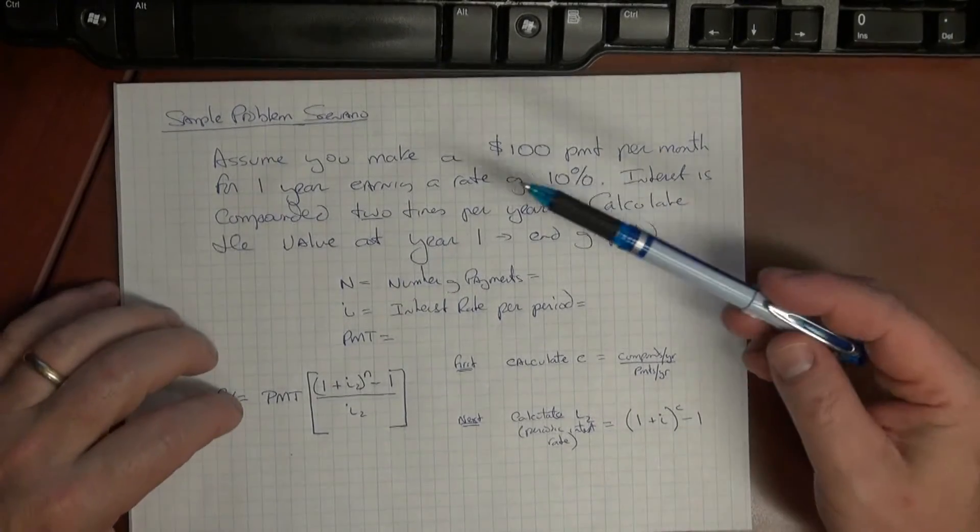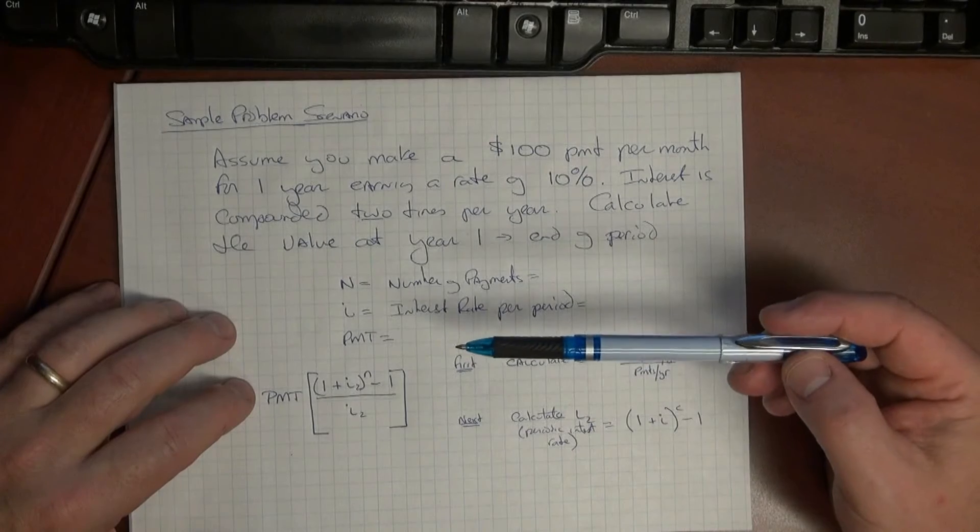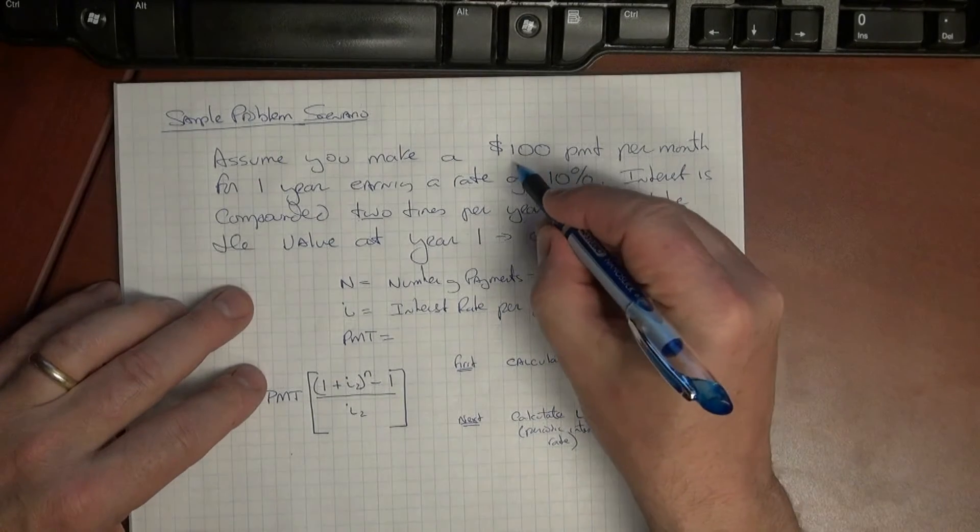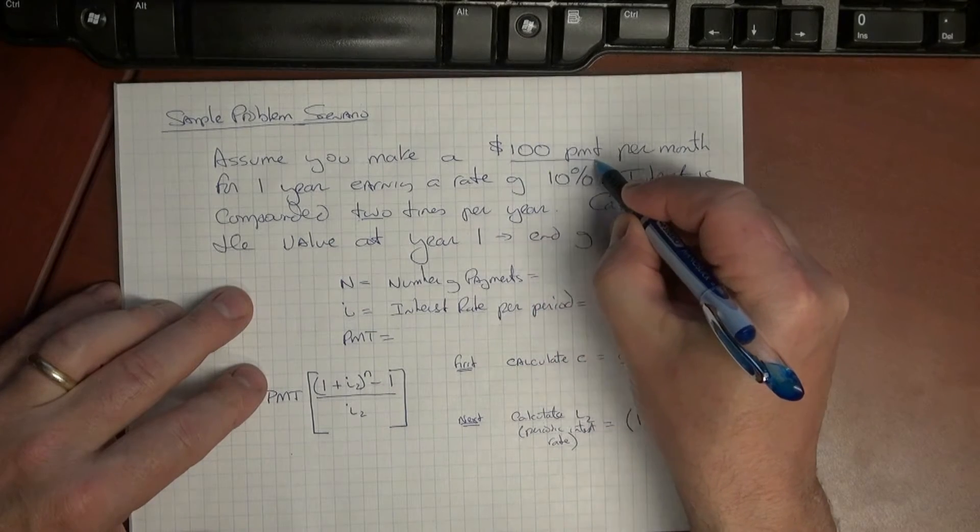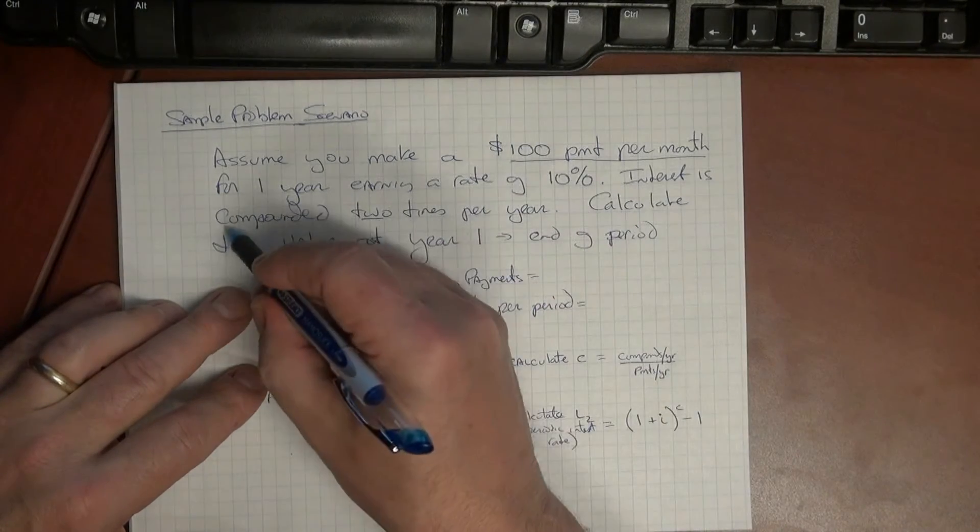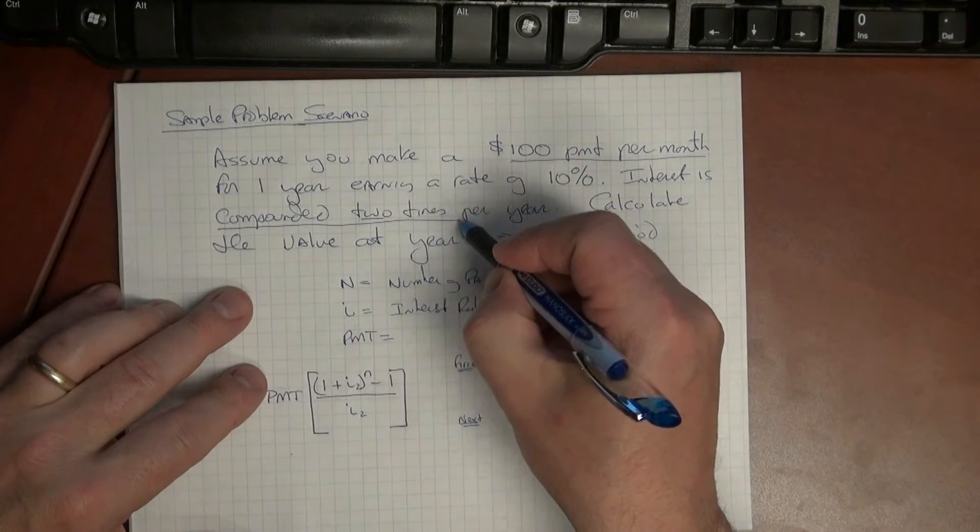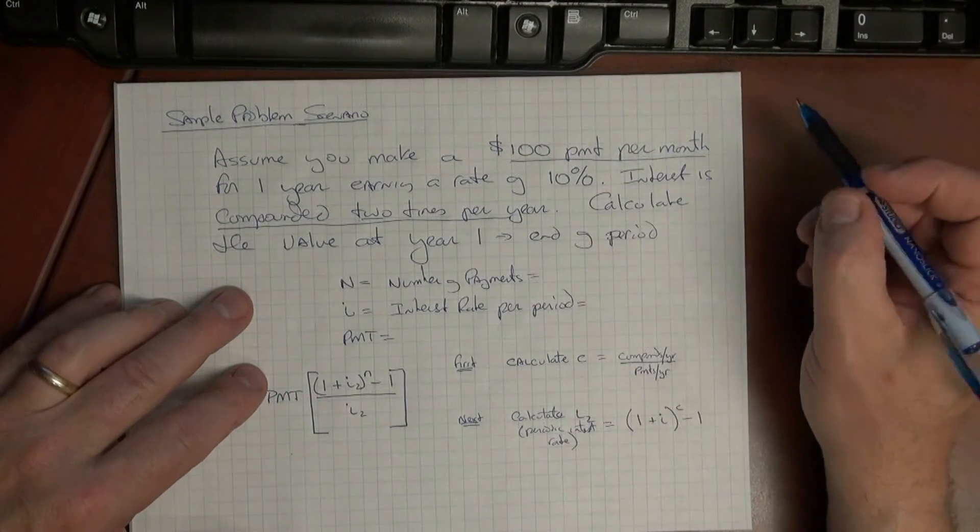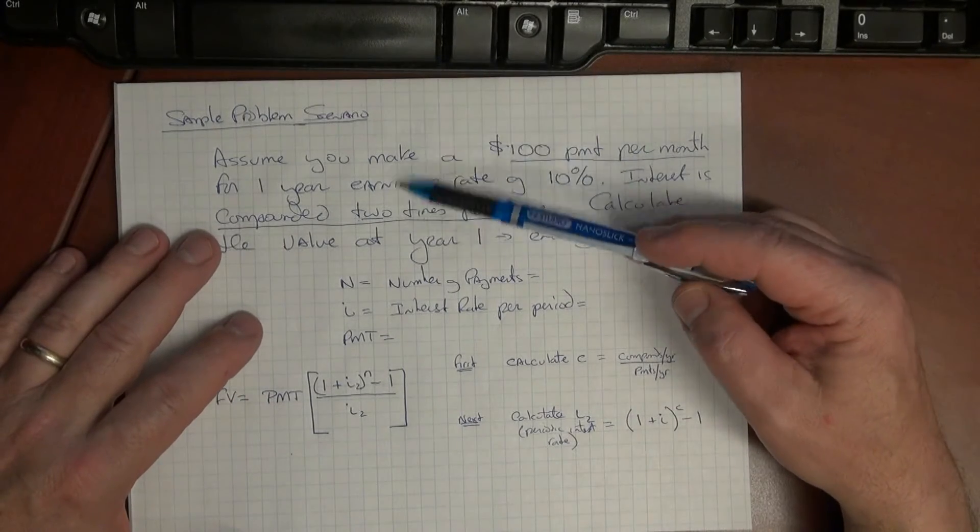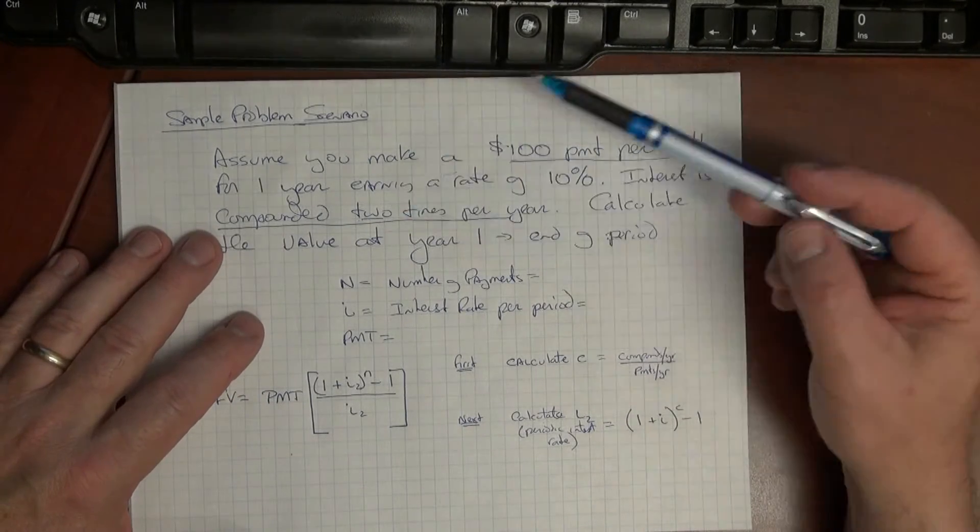Now the reason that this is a general annuity is well notice that the hundred dollar payment is per month, yet the compounding period is two times per year. So this is where we get this major distinction between the two basic types of annuity calculations.